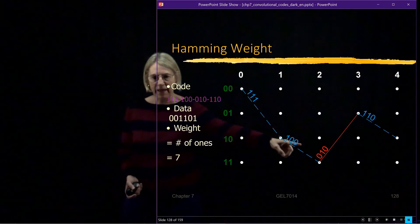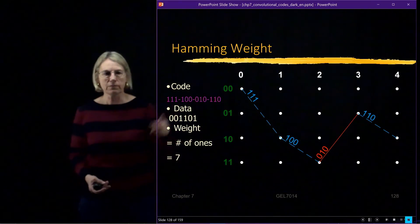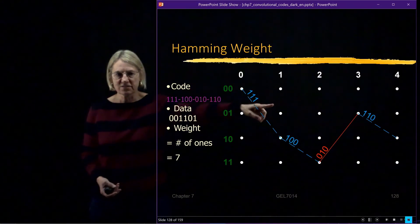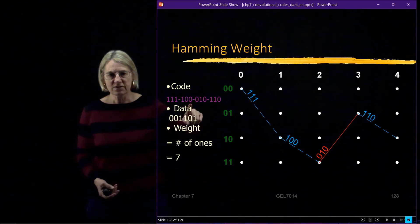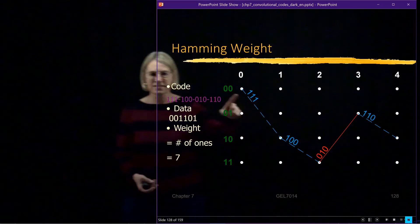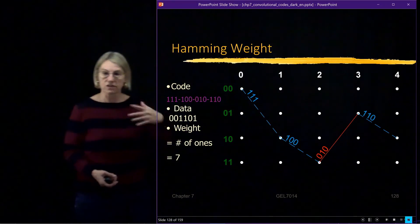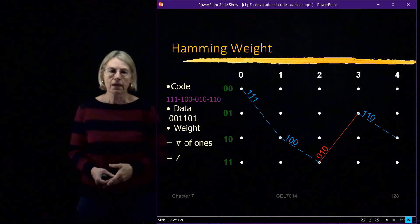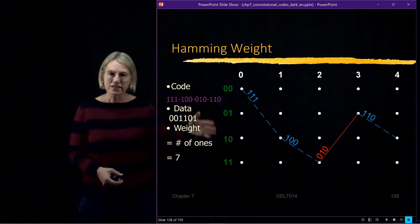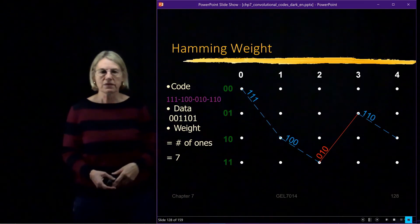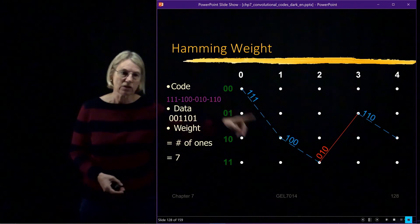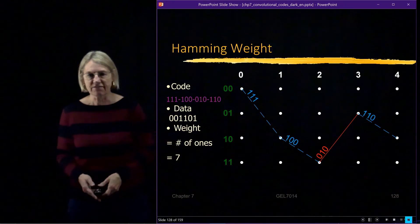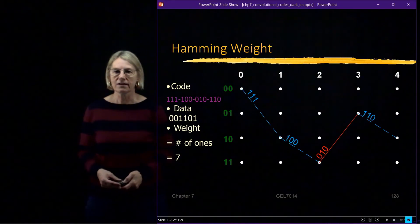I would read the code here off of the path. The codes along the path, it would be 3 ones. That's the first leg of the path. 1 0 0, second leg of the path, etc. So I would know the output in terms of the coded output of the encoder. And if I asked what was the weight of this path, that would be the number of ones in the path. And if I look here, I would count 7 ones in this path.